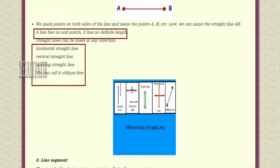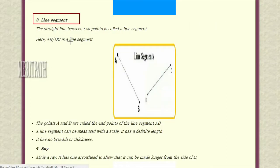Let us observe this picture. These two are vertical lines and these are horizontal lines. These vertical lines are parallel to each other — they have the same distance at all points. These two lines are intersecting; they are intersecting at a right angle, so we call them perpendicular lines.